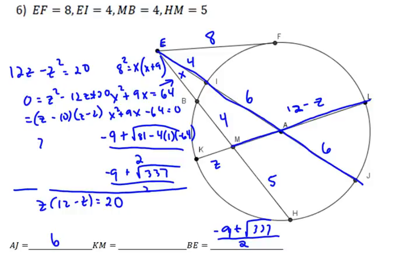So Z is either going to equal 10 or 2, but Z has to be 2 because 10 would be larger than the radius, and KM is shorter than the radius, so KM equals 2. And now you are done.